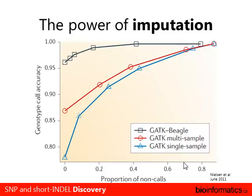Another study compared GATK on one sample (blue line) versus multiple samples (red line), and then GATK paired with Beagle, an imputation program (top line). Using multiple samples with GATK gave somewhat higher genotype accuracy, but pairing GATK with Beagle showed a substantially larger increase in genotype call accuracy.